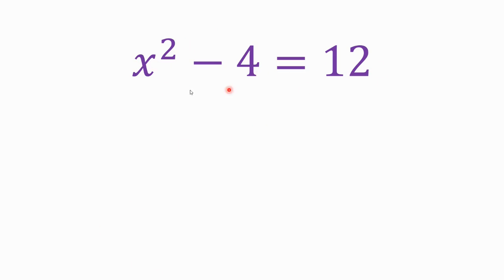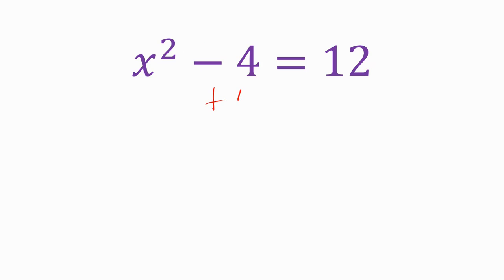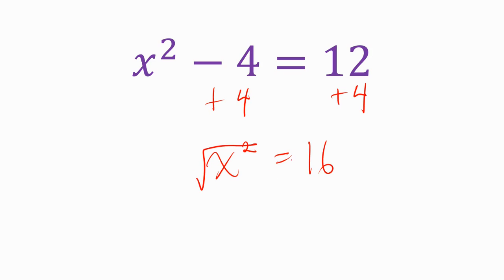On this one, it's tempting to take the square root of both sides right away, but you can't do that yet. What we need is just x squared on one side and some number on the other. So we need to get rid of this minus 4 by adding 4 to both sides. After we do that, we're left with x squared equals 16. Now I take the square root of both sides. The square root of 16 is 4, so x equals positive or negative 4.